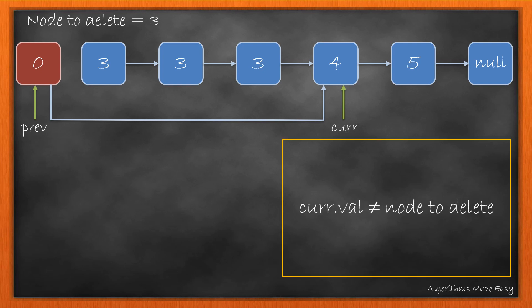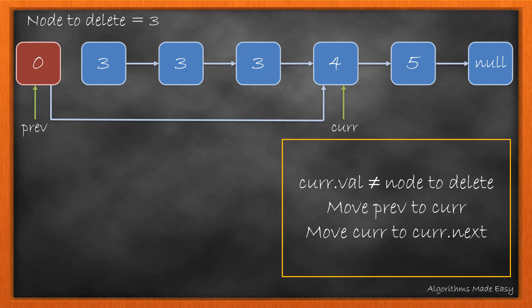Here, we see a node that we want to keep. So, we move our previous and current pointers one step ahead. And again check if the node needs to be deleted or not. As it does not, we again move both the pointers one step ahead.